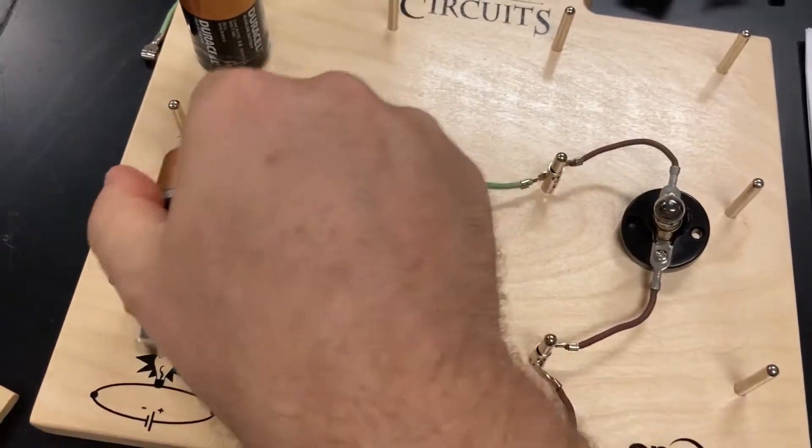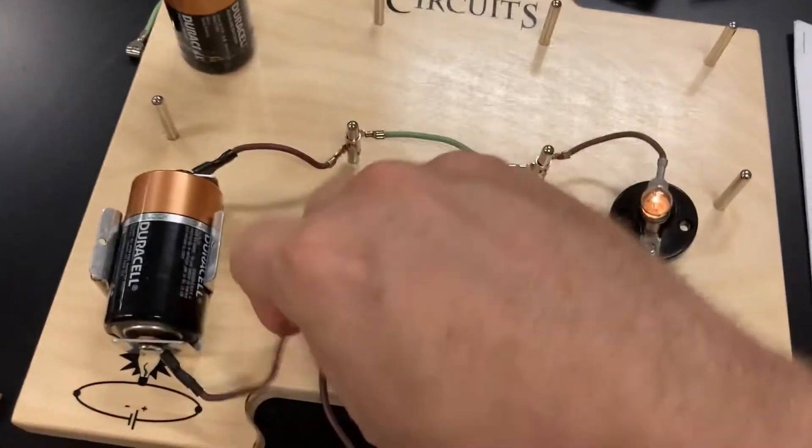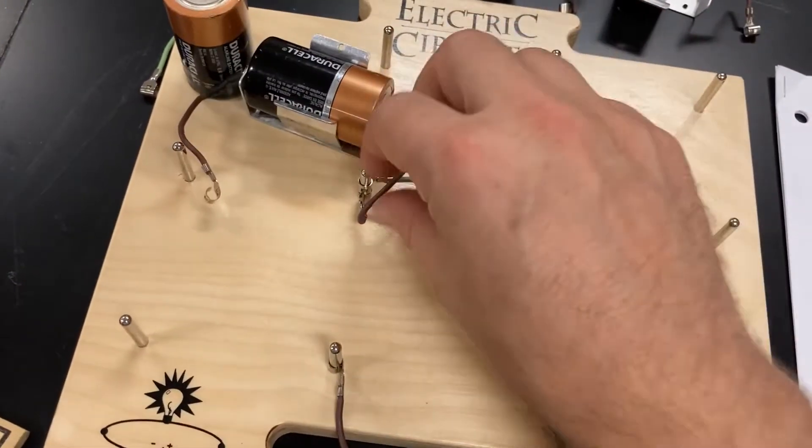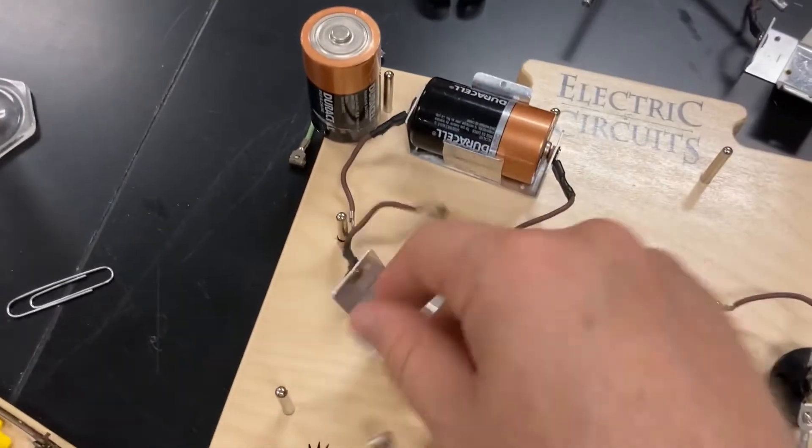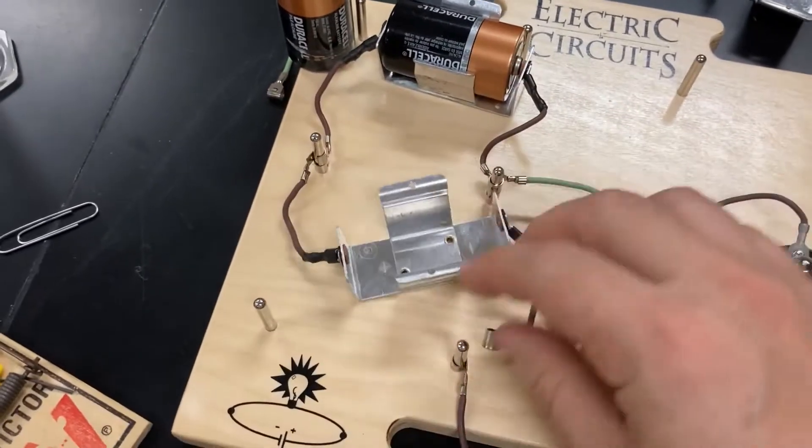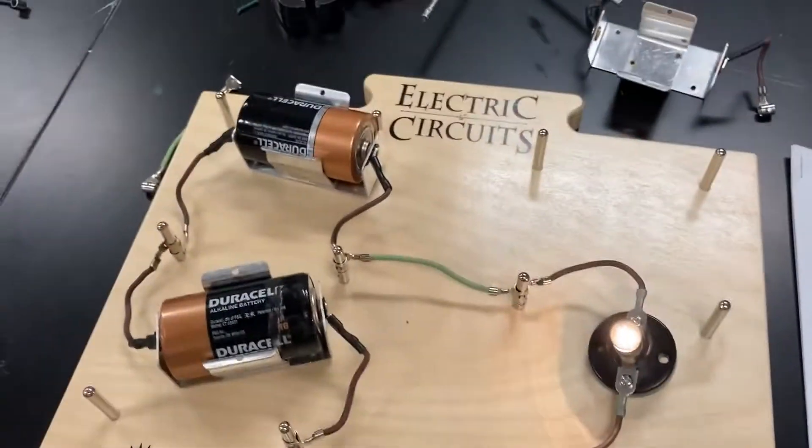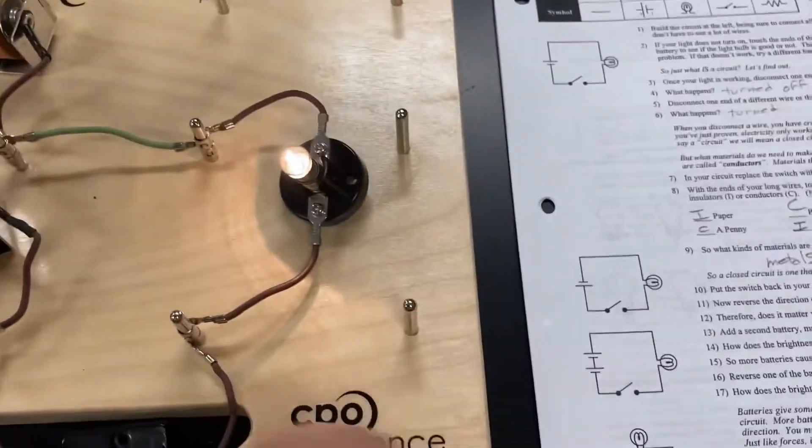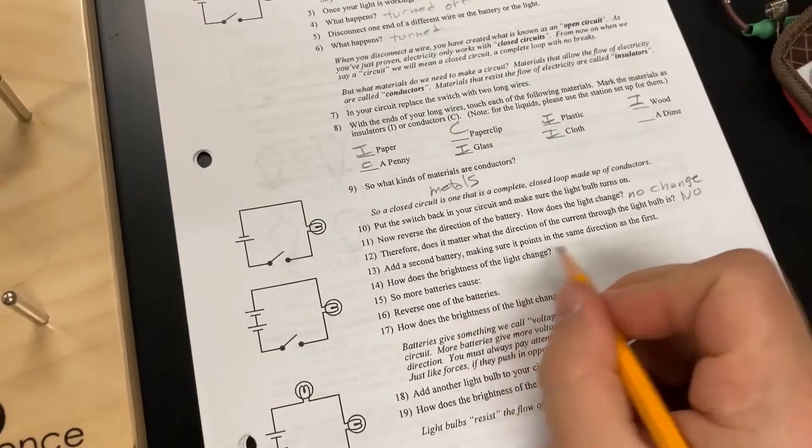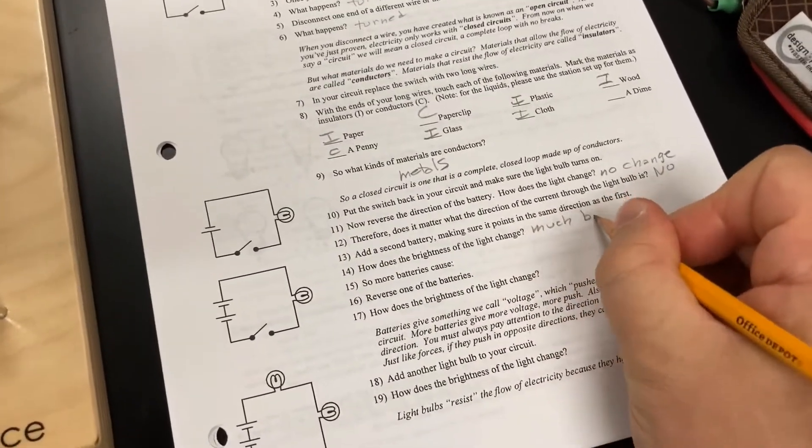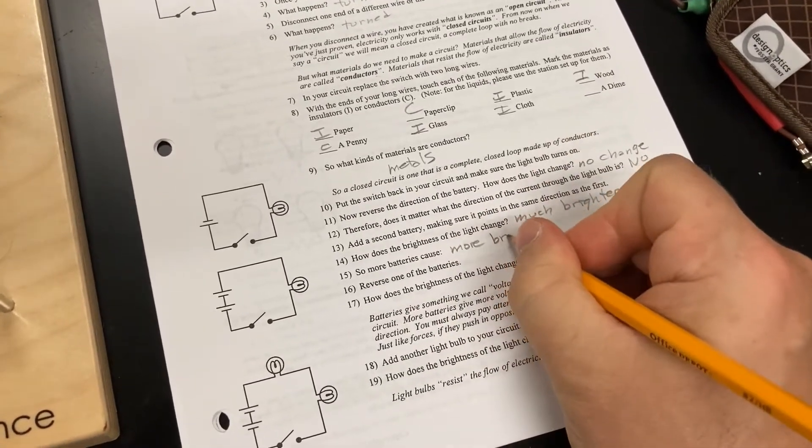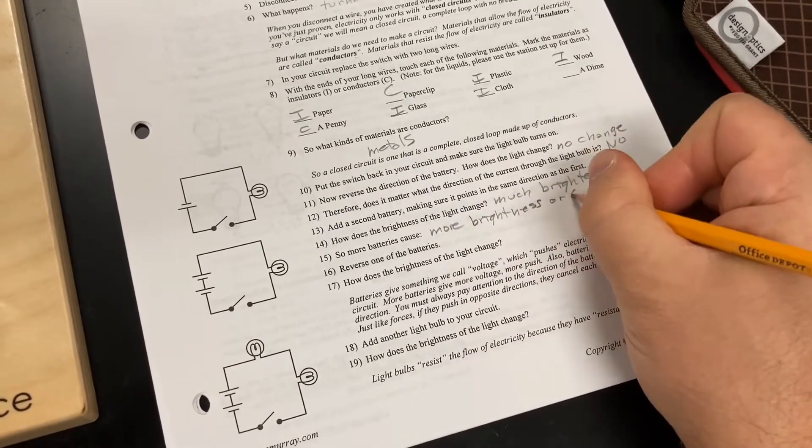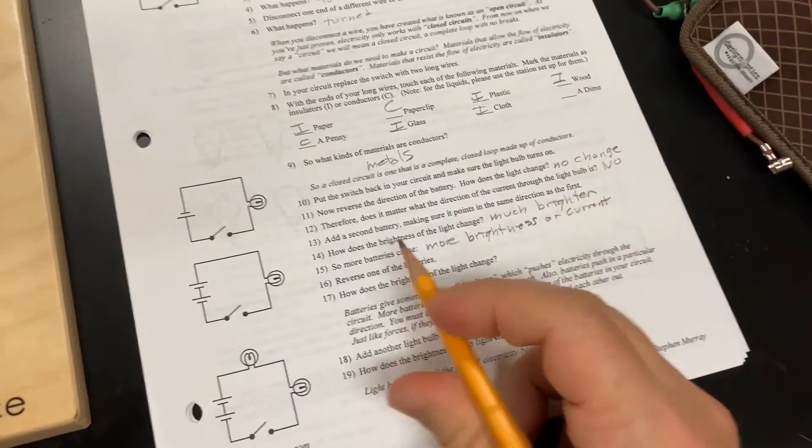Add a second battery. And let's make sure it's in the same direction. Battery. And again, fun, fun, fun. With only one hand. I'm trying not to break these. It's already putting strain on it. Hopefully, this is one that works. If not, we'll find out soon enough. And. Oh. Oh. Same direction. Light bulb. Very much brighter. Going to turn that off to save electricity. Much brighter. I could have put just brighter. But it looked much brighter to me. So, more batteries cause more brightness. Or current.